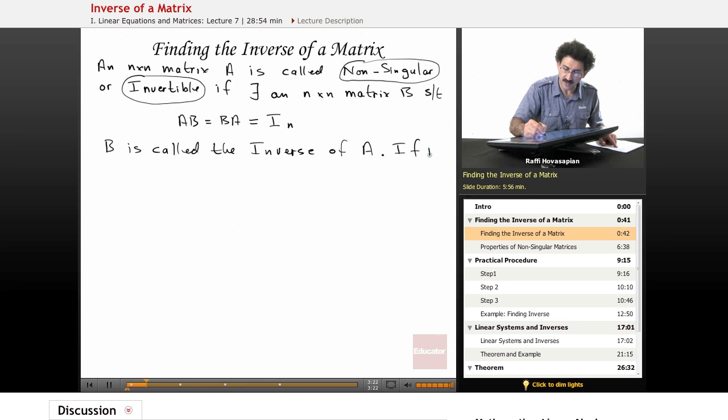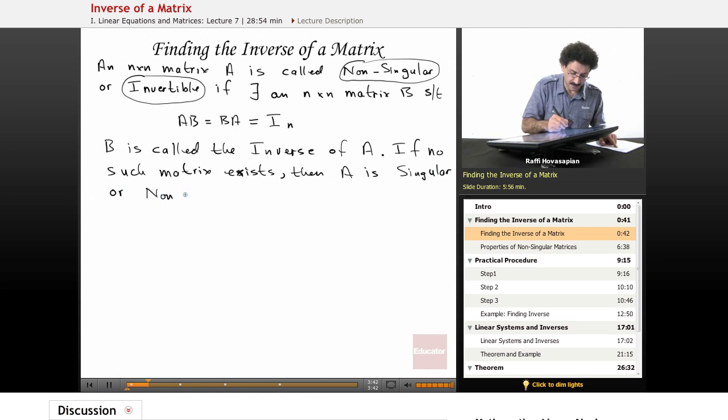As we just said, if no such matrix exists, then A is singular or noninvertible. Some of the confusion comes from the fact that sometimes we use nonsingular and invertible and singular noninvertible.